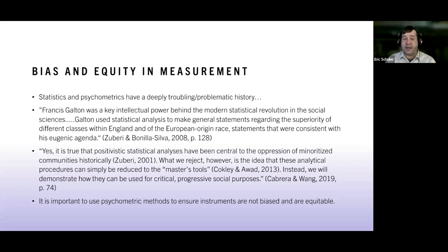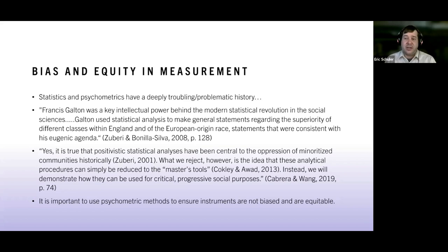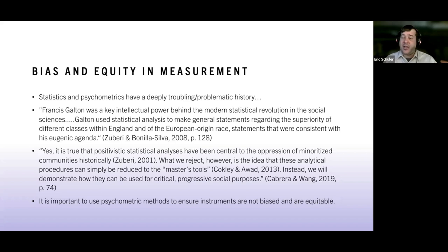This comes from early work within quantitative critical race theory — QuantCrit — exploring how modern statistical analyses can be used for progressive social justice purposes. There's a lot of work that needs to be done. Psychometric methods for measurement and bias detection are a really important tool to ensure our scales, measures, and tests are not biased and are equitable.